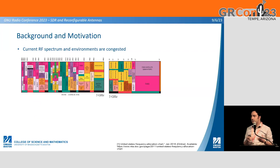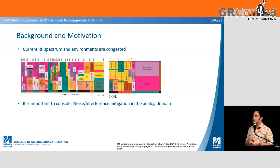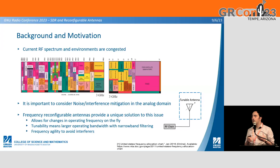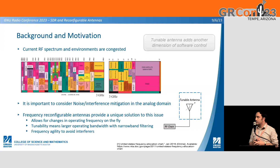Background motivation: RF spectrum environments are congested, particularly sub-6 GHz. An important concept is noise and interference mitigation in the analog domain, so we don't run into aliasing issues that are harder to get rid of after sampling. The benefit of frequency reconfigurable antennas is tunability — basically applying a unique solution to this problem. Changing operating frequency on the fly gives us a larger operating bandwidth while also providing some narrowband filtering, and frequency agility to intentionally avoid interference.